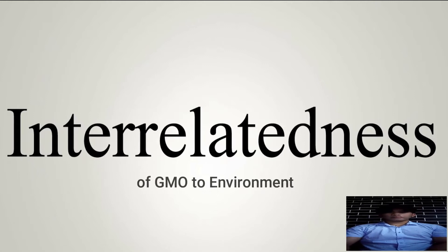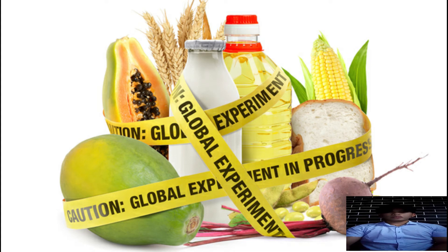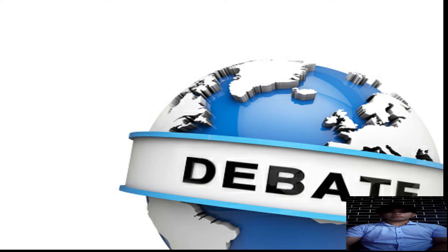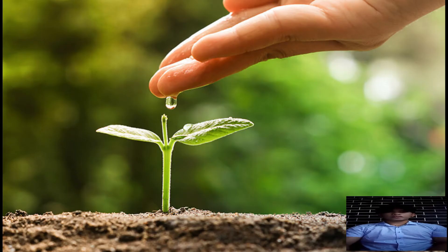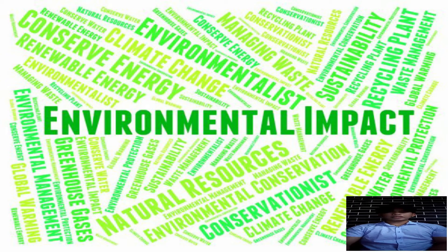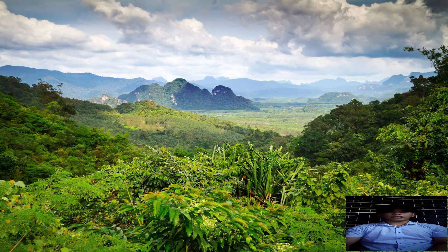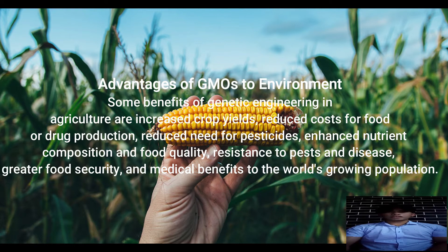Regarding the interrelatedness of GMO to the environment: assessing the environmental impact of GMO is often difficult as many factors are considered. Some societies focus on potential risks while others emphasize potential benefits. Environmental risks differ from food safety risks in several ways, and the impact of new biological elements in an ecosystem may take years or decades to be understood. Benefits of GMO in agriculture include increased crop yield, reduced cost for food or drug production, reduced need for pesticides, and improved nutrient composition and food quality.